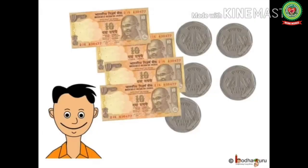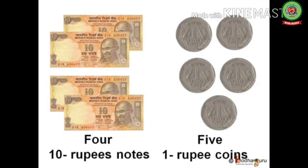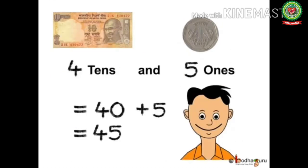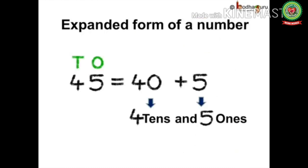Look how much money Aman has in his piggy bank — he has a few ten rupee notes and a few one rupee coins. He has four ten rupee notes and five one rupee coins, so he has four tens and five ones, which equals forty plus five. Forty plus five equals forty-five, so Aman saved forty-five rupees. Aman's saving of forty-five rupees in expanded form was forty plus five, which is four tens and five ones.